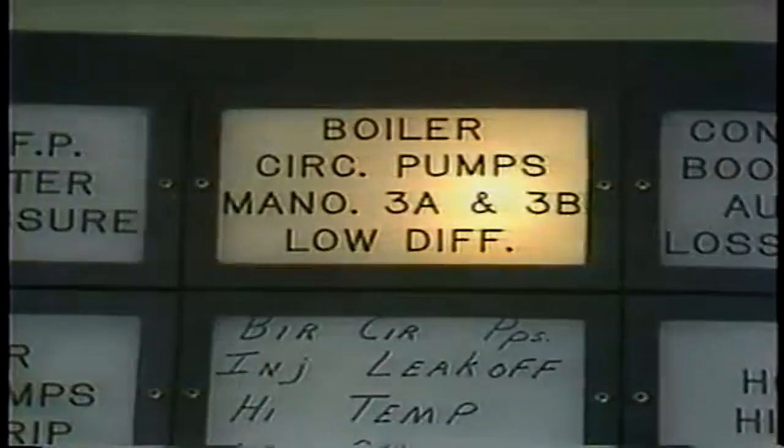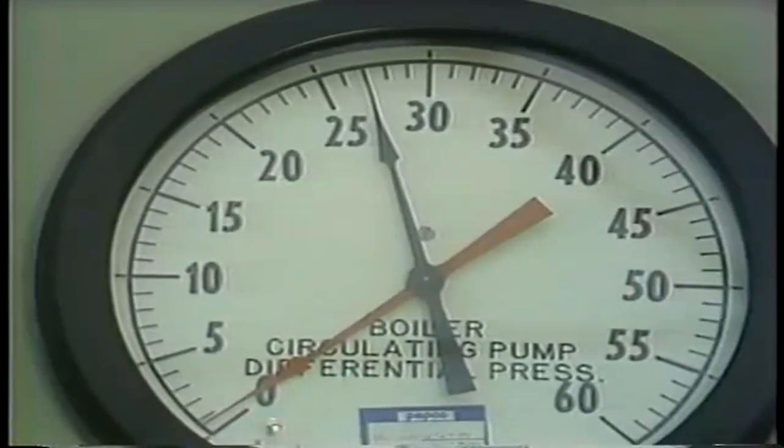Depending on the severity of the problem, an operator either reduces the load on the boiler or shuts the unit down. The loss of a boiler water circulating pump will affect the circulation of water and steam through the boiler. This will be indicated in the control room by both annunciator alarms and a change in the differential pressure between the inlet and outlet headers of the pumps. The loss of a boiler feed pump will cause a sudden drop in feed water flow and drum level. If all the boiler water circulating pumps or boiler feed pumps fail and can't be restarted, the boiler must be shut down and the turbine tripped. The key thing to remember is that in most cases you can continue to operate at a reduced load. Your job is to identify the problem, isolate the failed component if possible, and take immediate action to stabilize the boiler.